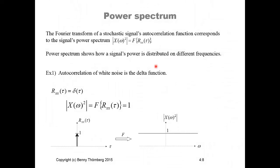Going directly to an example: white noise. The autocorrelation of white noise is the delta function. The reason it becomes a delta function is that for white noise, adjacent samples in time are completely uncorrelated. So the autocorrelation function of white noise is equal to the delta function. The power spectrum — denoted as the frequency transform of |X(ω)|² — equals the Fourier transform of the autocorrelation function, which equals 1, because the Fourier transform of the delta function is equal to 1.